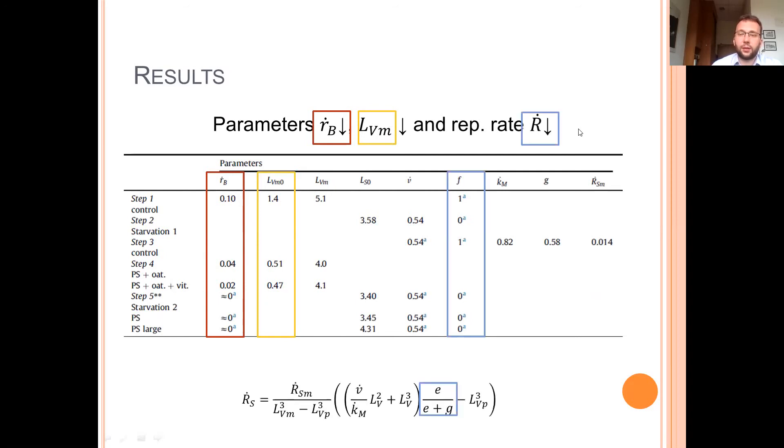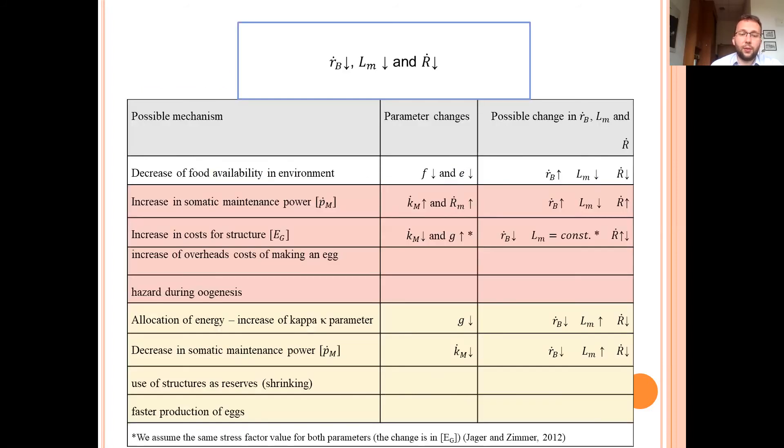And obviously, the reproduction rate, this is not a parameter, this is a rate, and the reproduction rate decreased as the value of f and value of e, reserve density, also decreased.